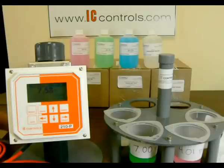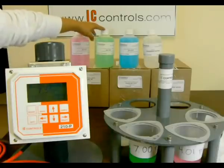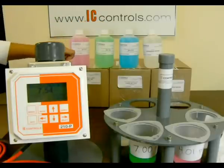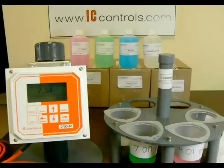It includes a pH 4 buffer color-coded red, a pH 7 buffer color-coded green, and a pH 10 buffer color-coded blue. Also included is deionized water. IC Controls pH calibration kits ensure accurate and reliable results while making the technician's job easier.